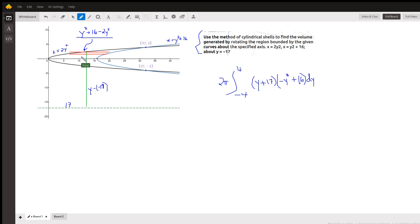And we want to revolve the region between those two parabolas about the line y equals negative 17, using the shell method.